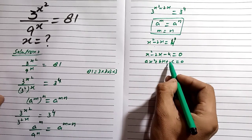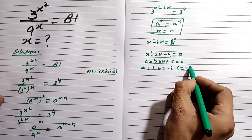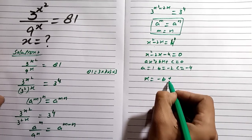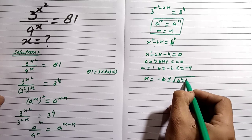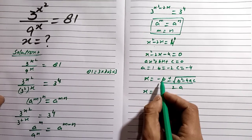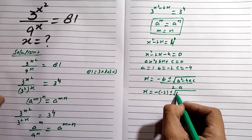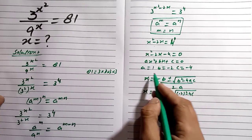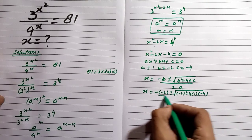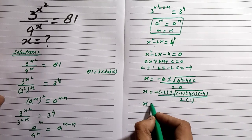In our equation, a equals 1, b equals minus 2, and c equals minus 4. Using the quadratic formula, x equals minus b plus or minus the square root of b² minus 4ac, all divided by 2a. So x equals minus(minus 2) plus or minus the square root of (minus 2)² minus 4 times 1 times (minus 4), divided by 2 times 1.